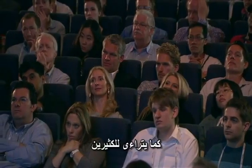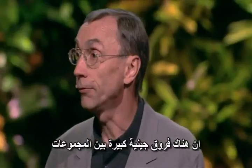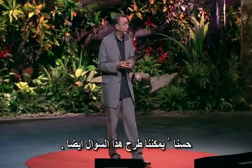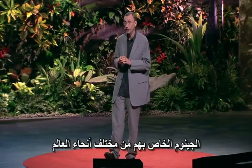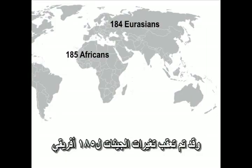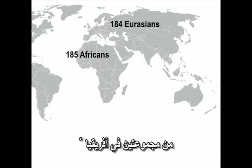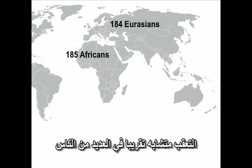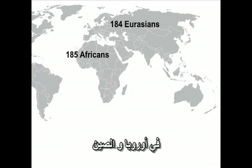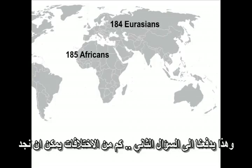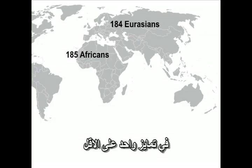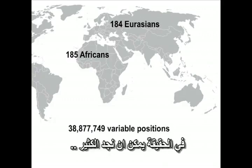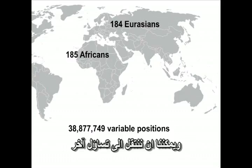But does this mean that there are huge genetic differences between groups of people on different continents? There is a project underway to sequence 1,000 individuals from different parts of the world. They have sequenced 185 Africans from two populations in Africa, and approximately equally many people in Europe and in China. We find 38 million variable positions — letters that vary in at least one of those individual sequences.